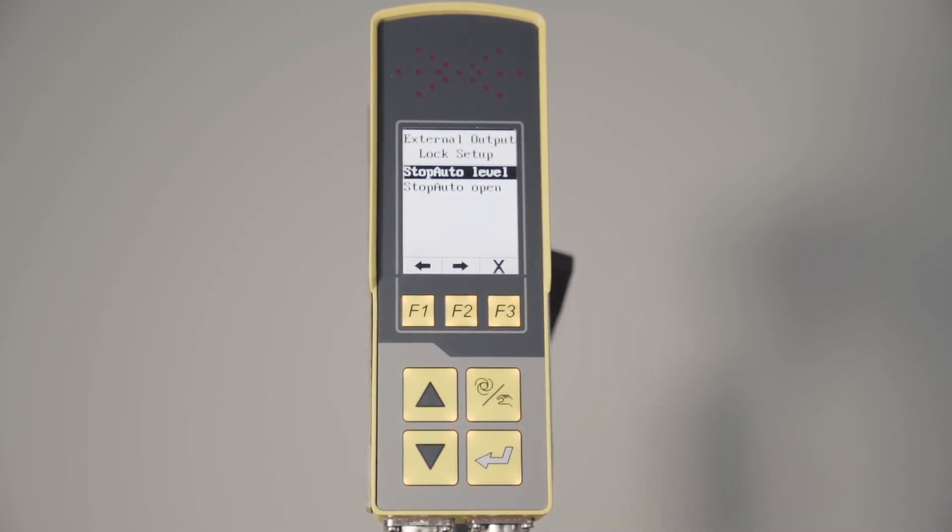Stop auto level or stop auto open. That's for pin J on the back of the machine, which tells are you in forward motion or are you in neutral.